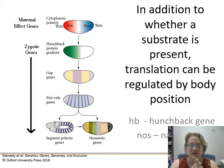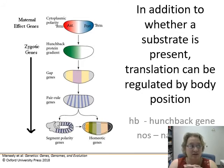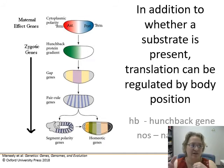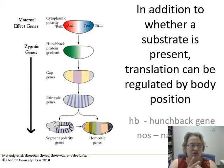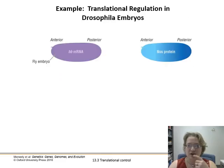Here's an interesting example of how translation is regulated by position within a body. We're looking at Drosophila larvae and how proteins are translated across different areas of the cell. We're going to talk about the anterior (front) and the posterior (back) of a Drosophila embryo, focusing on two main genes: the hunchback gene (hb) and the nanos gene (nos).